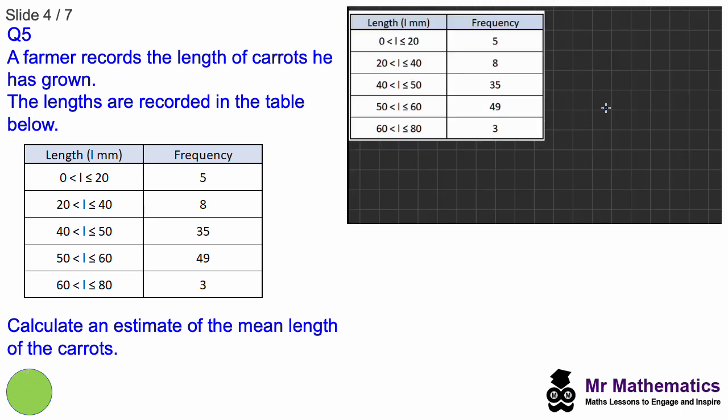We've been asked to work out an estimate for the mean length of carrots. Now with an estimate, because we do not know the exact values of each length. All we've been given is the range. We know there are 5 carrots within the range of 0 to 20, but we don't know the exact value of them. So to work out an estimate for the mean, we need to work out the midpoint of each class. Between 0 to 20, the midpoint is 10. Between 20 to 40, the midpoint is 30. Between 40 to 50, we have 45. 50 to 60, we have 55. And from 60 to 80, we have a midpoint of 70. Now we need to work out the total estimate of the length for these 5, 8 and so on number of carrots. So we're going to work out the totals.